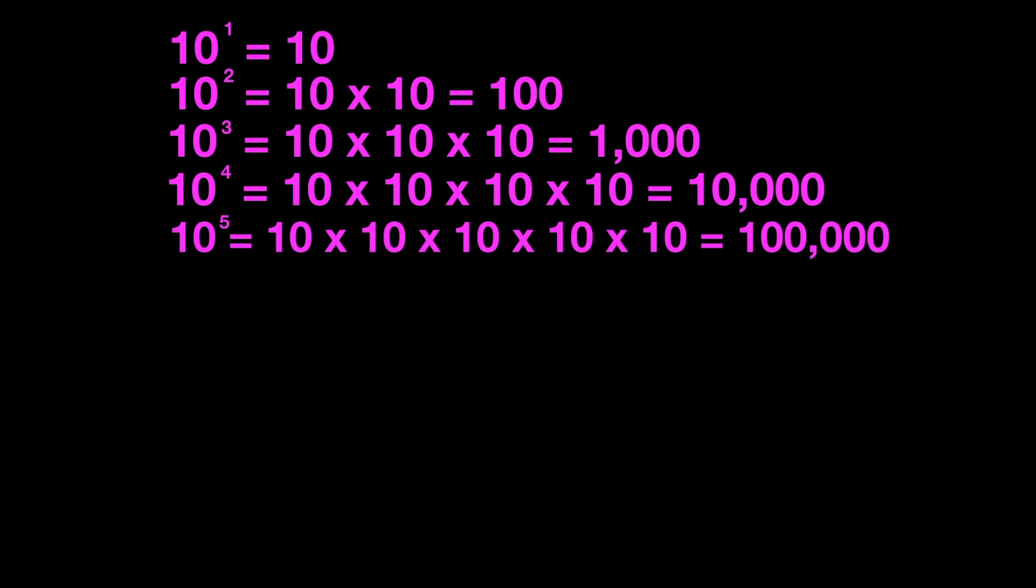Look, there's a pattern. 10 to the first power had one zero because it was worth 10. 10 to the second power had two zeros, it was worth 100. 10 to the third power had three zeros, it was worth 1,000. 10 to the fourth power was 10,000, so it has four zeros. 10 to the fifth power, or the power of five, had five zeros for 100,000.